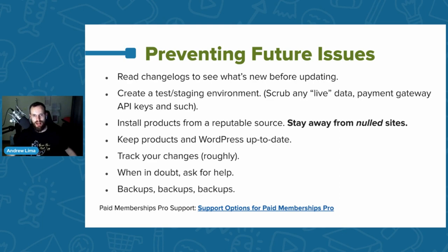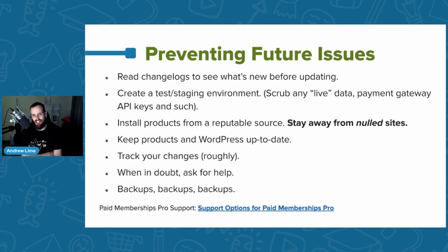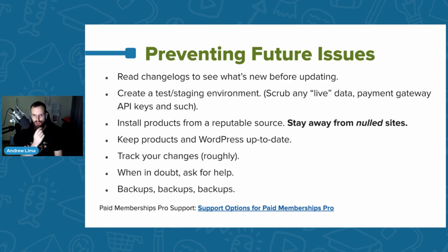Preventing future issues: read your changelogs — we try to write them in human-friendly language describing what each fix or update does. On the plugins update screen you'll see the changelog, so take a glance to see if anything might break your site. You'll also want to create a staging or test environment. I wouldn't recommend cowboy coding — adding code snippets directly on a live site with hundreds or thousands of visitors — because people are very quick to complain when your site goes down.